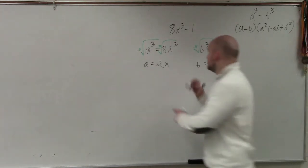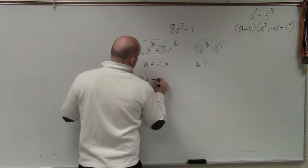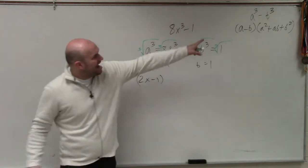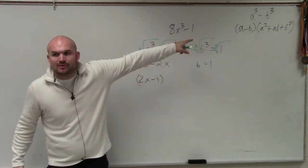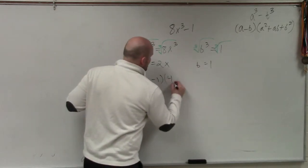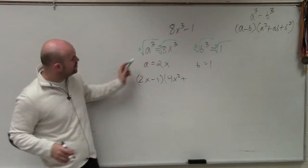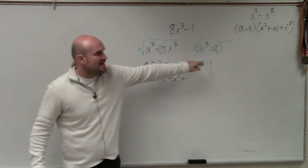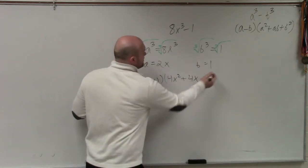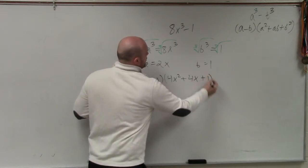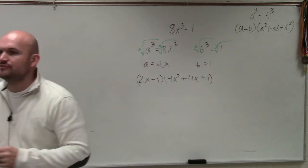So by plugging them into this equation, I have 2x minus 1 times a squared, which is 2x times 2x, which is 4x squared, plus 2 times a times b. 2 times a, which is 4x, times b, so that's still going to be 4x, and then plus b squared, which is 1. And that is your factored form.